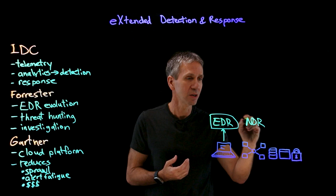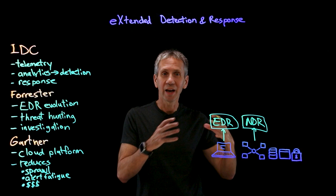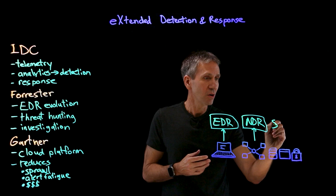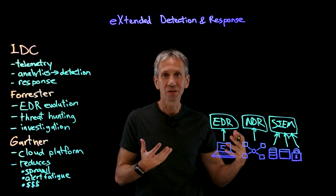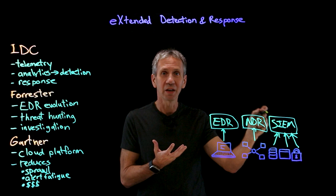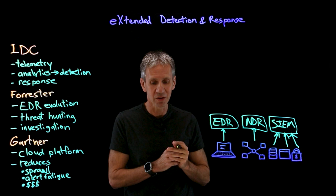What else could I have in this system? I've got a network, so I could have a network detection and response system — an NDR — which looks at security from the network perspective. Then we could have a security information and event management system, a SIEM, which could gather information from sources such as a database, an application, and other security appliances and components. A SIEM could also gather information from an EDR and an NDR, but in this example we'll leave them all as separate peer systems.